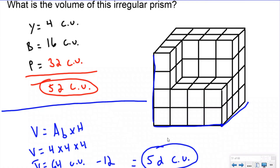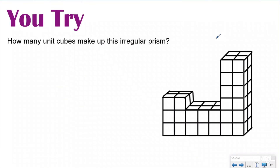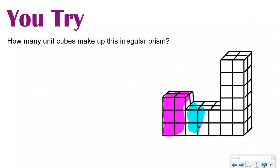Let's do a 'you try' problem. Go ahead and pause the video and figure out how many unit cubes make up this irregular prism. My hint: split it into three different prisms. Once you've solved it, push play to check your answer. I'll split this apart into three different prisms — using a highlighter or a pen to make the lines dark so you can clearly see the three shapes. You could have split it differently, but this makes the most logical sense since they're all different heights.